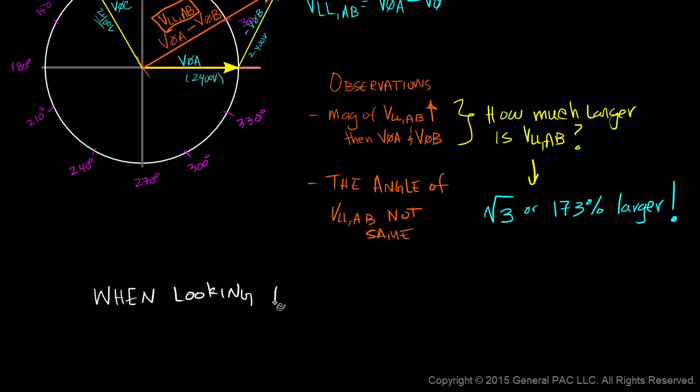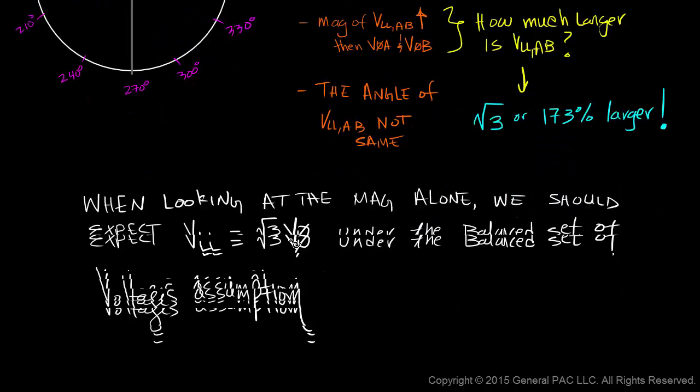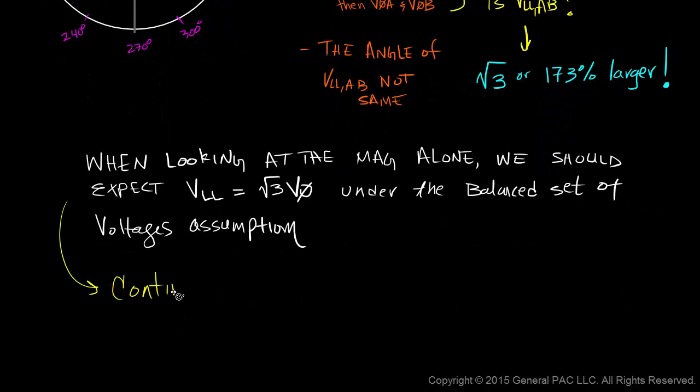When looking at the magnitudes alone, we should expect that the line-to-line voltage to be equal to root 3 times larger than any phase voltage under the balanced set of voltages assumption. We'll continue our discussions about root 3 in the next module.